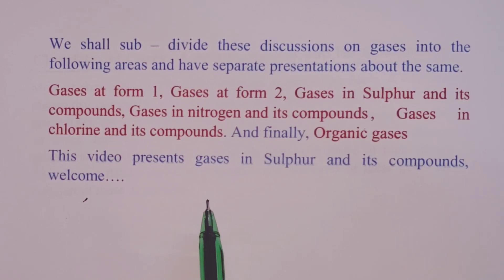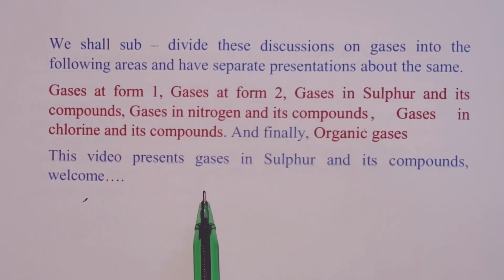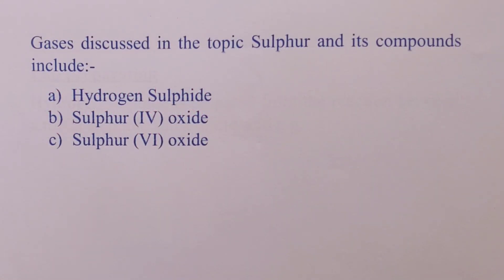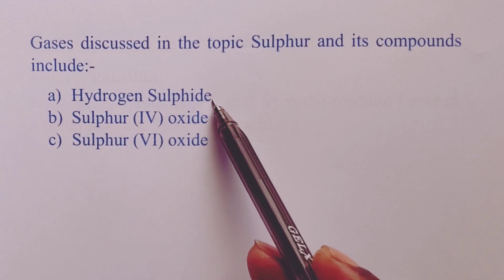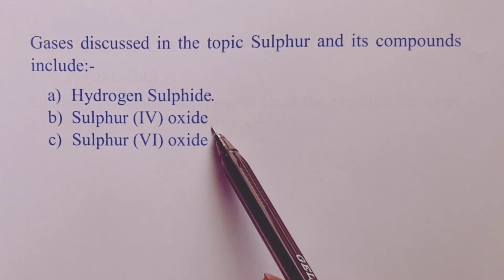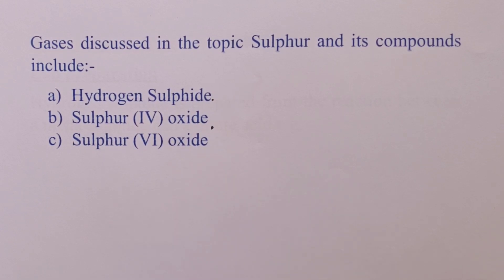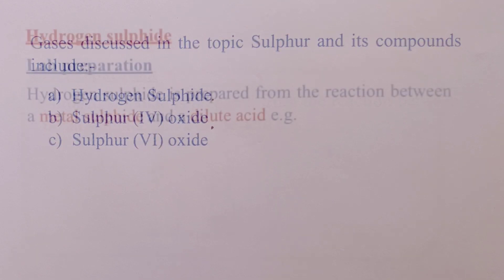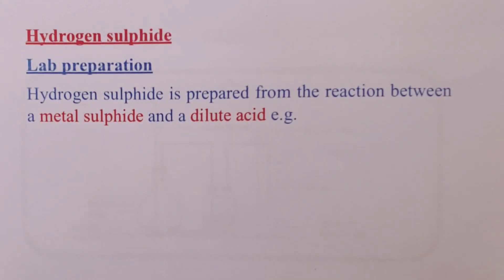Welcome and stay on with the Kenyan teacher until the end of the video. Gases discussed in the topic sulfur and its compounds include hydrogen sulfide, sulfur dioxide (SO2), and sulfur trioxide (SO3). We shall begin with the first gas, hydrogen sulfide, and let's have a look at how hydrogen sulfide can be prepared.